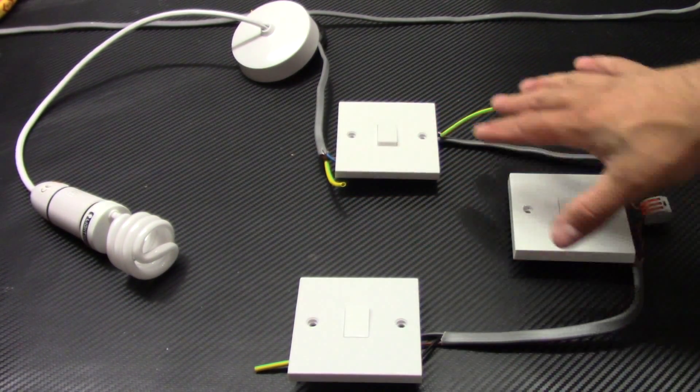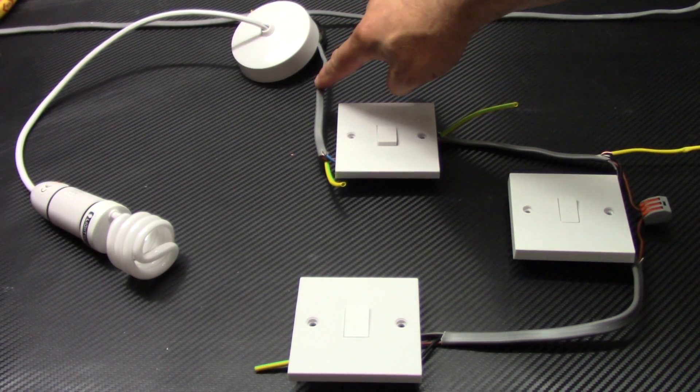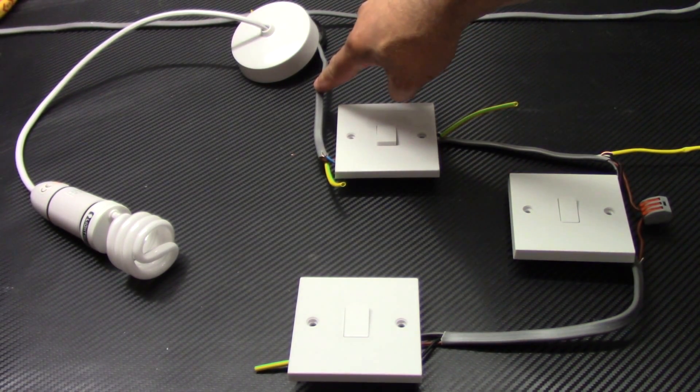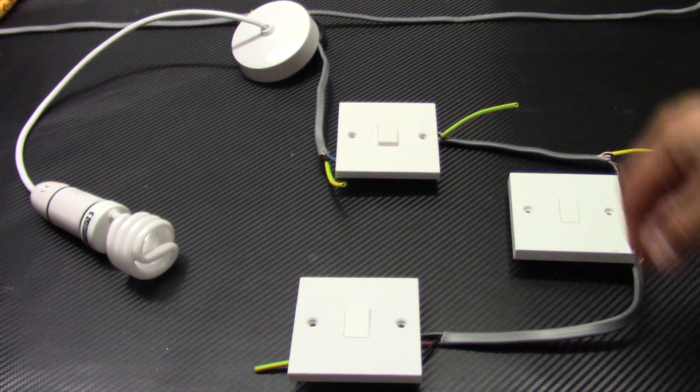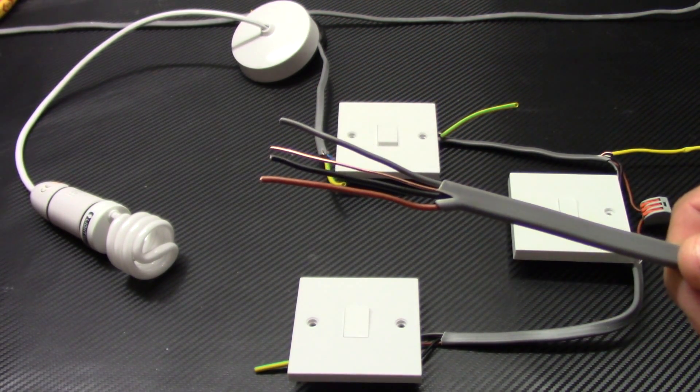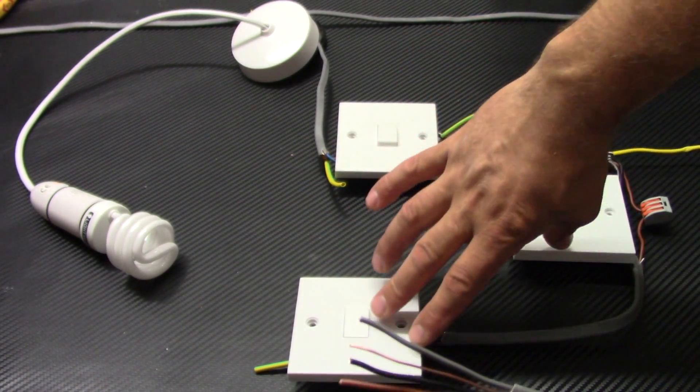To connect all of the switches together what you need? You need twin and earth 1.5 or 1 millimeter from the ceiling rose to the first switch and 1mm 3-core and earth between these two switches and these two switches.